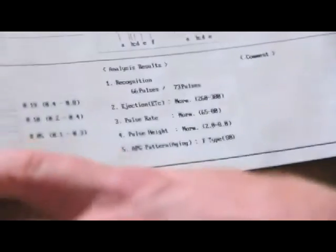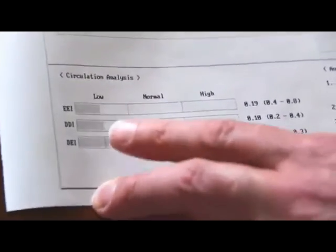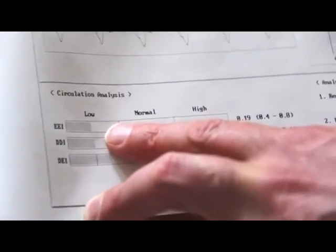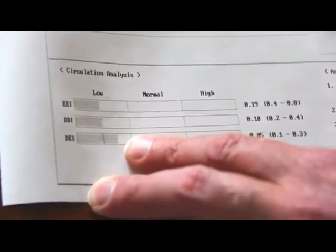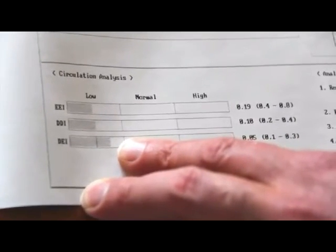Then we go to the circulation analysis, and the first reading is large artery circulation, small artery circulation, and then peripheral or capillary circulation.